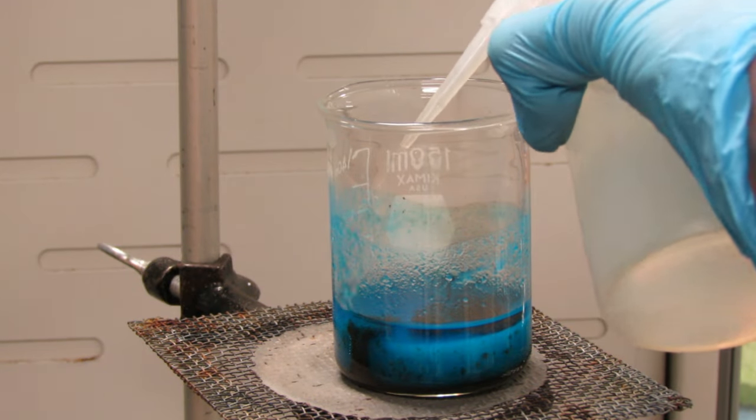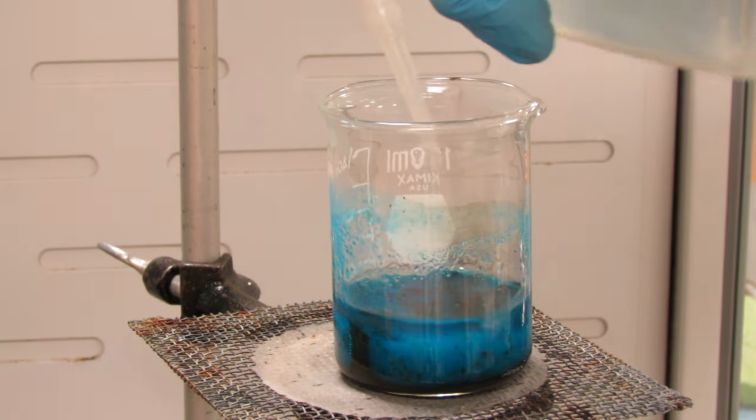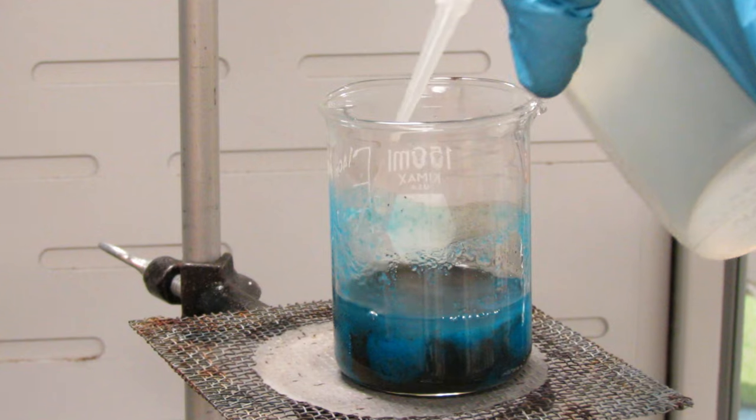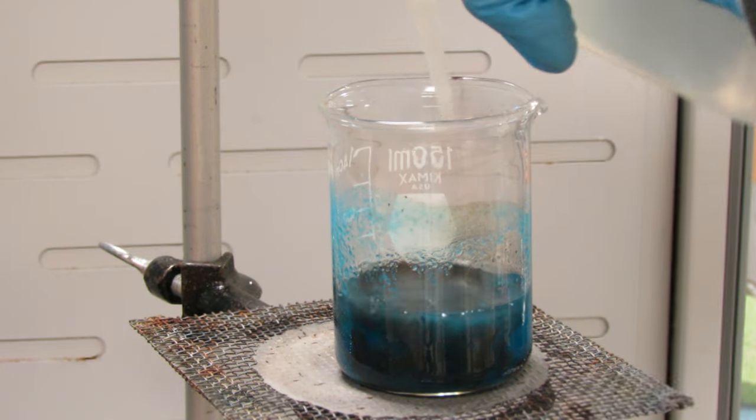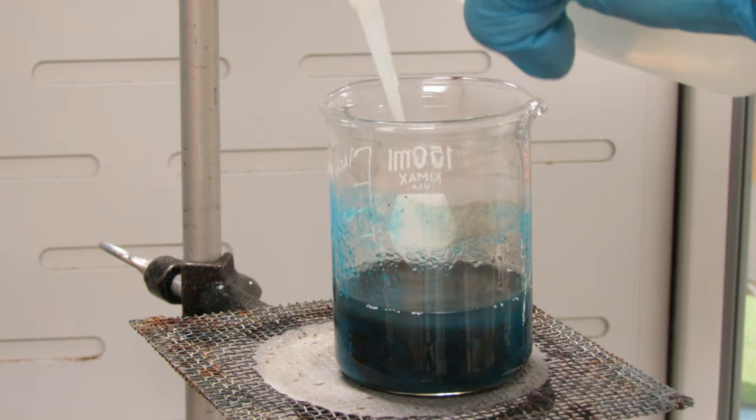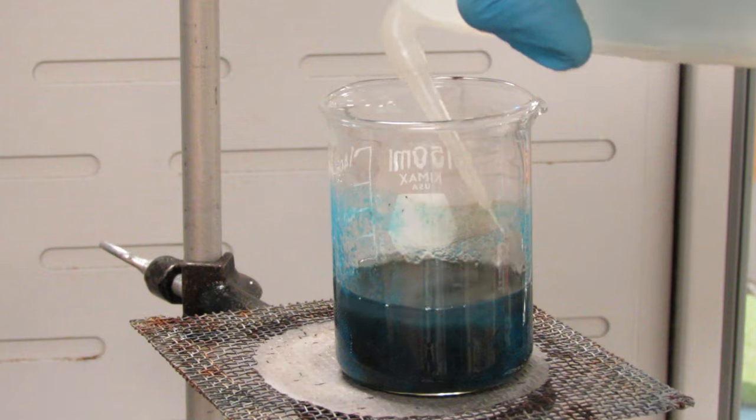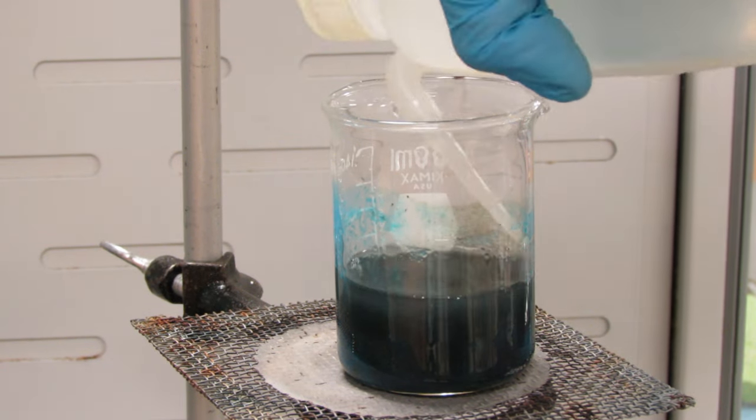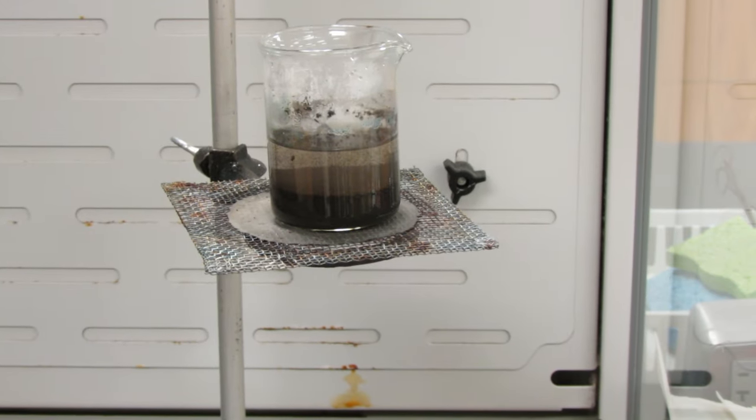I'm using a wash bottle to get all the copper hydroxide off the sides of the beaker. Now that a lot of copper oxide has begun to form, the solution is quite dark. Here's the finished product.